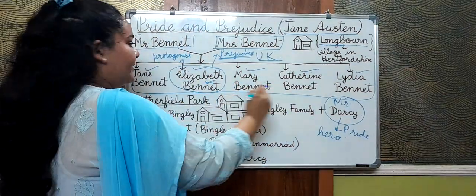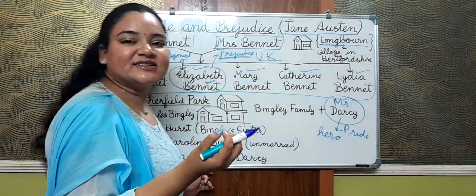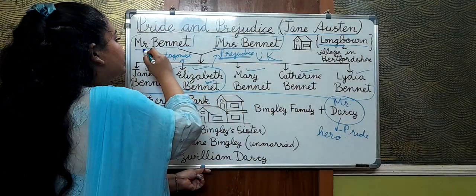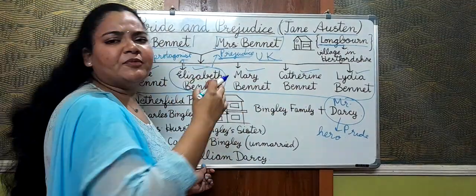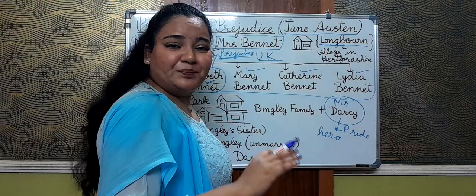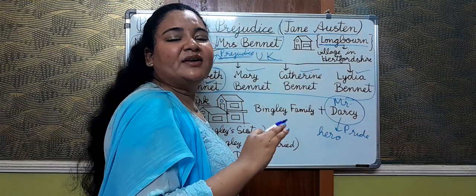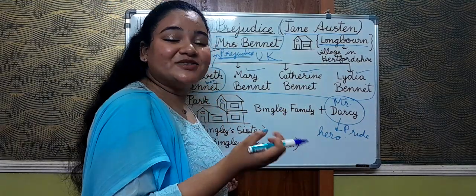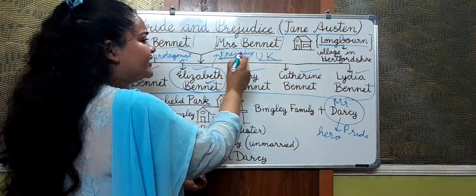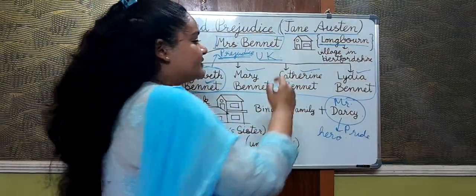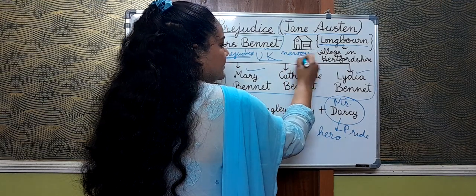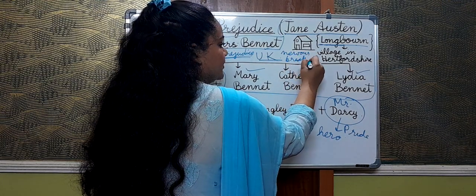To give you a brief of these characters: Mr. Bennet is a very pragmatic and logical type of person. Mrs. Bennet, on the other hand, is very impulsive and, to be honest, quite ill-mannered as well. She always complains of some nervous breakdown.